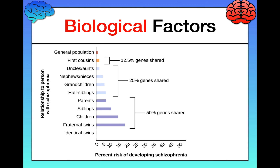Moving further: parents, siblings, children, and fraternal twins share 50 percent of your genetic information, so your risk of developing schizophrenia increases even more if one of them has it. And finally, identical twins — as we've learned from previous videos, you share 100 percent of your genetic material with an identical twin, and the risk of developing schizophrenia is something like 48 percent. If your identical twin has it, it's essentially a coin flip of whether you will develop it as well. The punchline is: the more genetic information you share with a person who has schizophrenia, the more likely you are to develop it yourself, suggesting a significant genetic and biological component to its development.